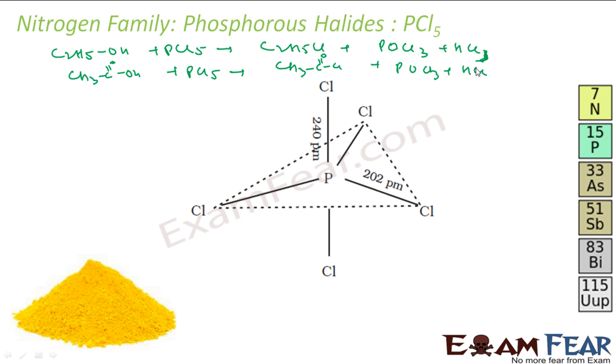The next important reaction for PCl5 is, if I have finely divided metals, when you heat these finely divided metals with PCl5, it gives corresponding chlorides. For example, silver plus PCl5 will give you silver chloride and PCl3.